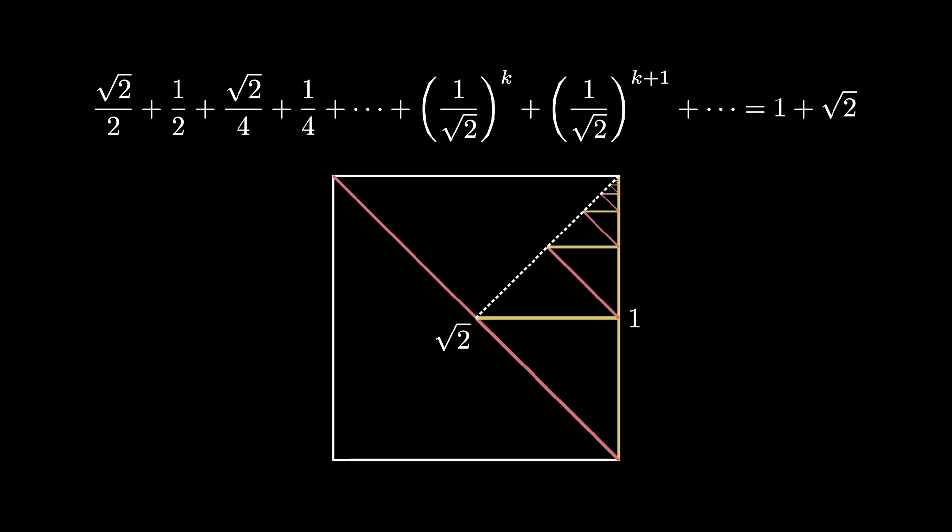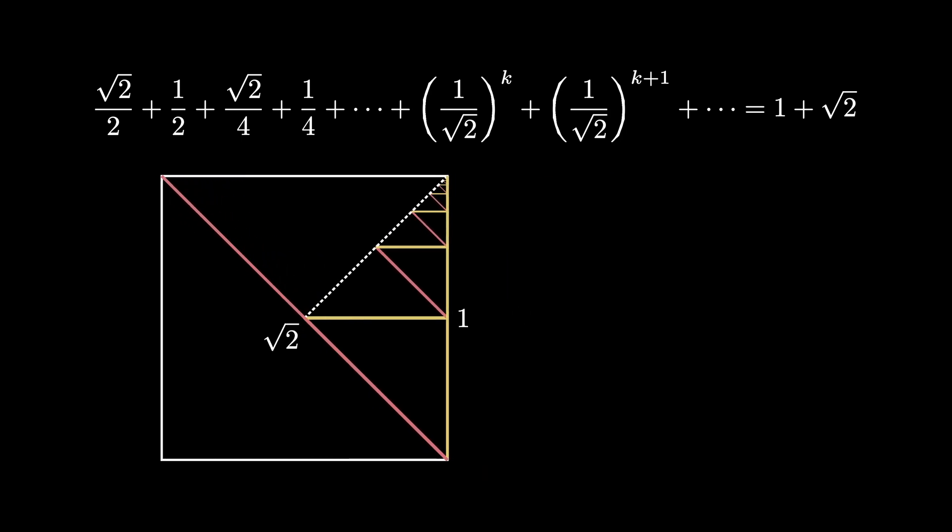That means our infinite sum is equal to 1 plus the square root of 2. So from this diagram we see that the sum where k ranges from 1 to infinity of 1 over the square root of 2 raised to the kth power is equal to 1 plus the square root of 2. As a bonus fact, we note that the number 1 plus the square root of 2 is known as the silver ratio.